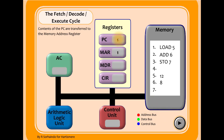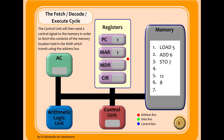If we click play, the first thing that happens is the program counter is transferred to the memory address register, so the memory address register now holds address one. Next, the control unit sends a signal from the memory address register, collecting the address onto the address bus. This is the fetch part of the fetch-decode-execute cycle — it's going to fetch whatever is in memory instruction one.